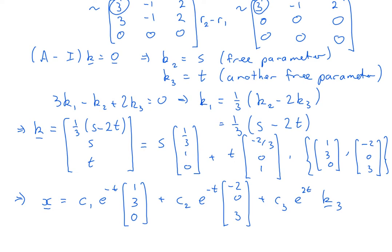So if you have a repeated eigenvalue and it has enough linearly independent eigenvectors — that is, if the geometric multiplicity equals the algebraic multiplicity for all eigenvalues — then you will still find the general solution in this way: all solutions are essentially exponentials of this type. You can guess what's coming next: what happens when you have a repeated eigenvalue where the geometric multiplicity is less than the algebraic multiplicity? Then you'll need to look for something else, and that's what we will do in the next lecture.